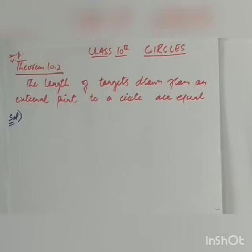We have a circle and we will draw an external point. We will draw two tangents to the circle. Then we will show that the two tangents drawn from the external point have equal length. Let's move on to this diagram.